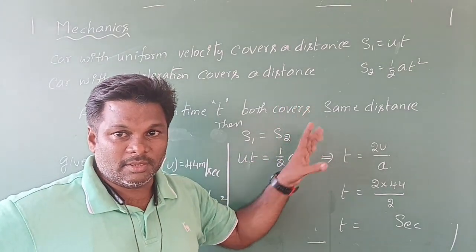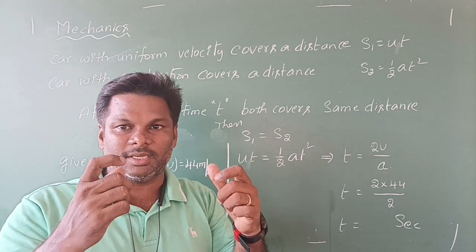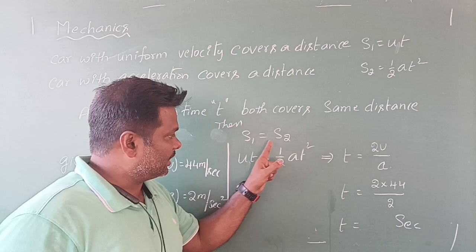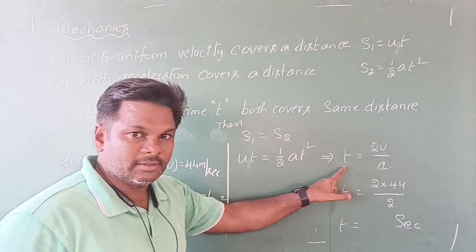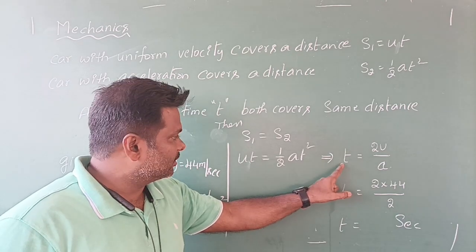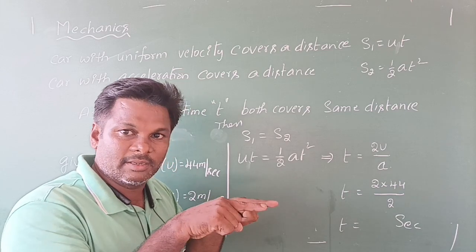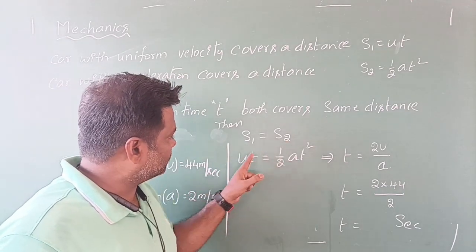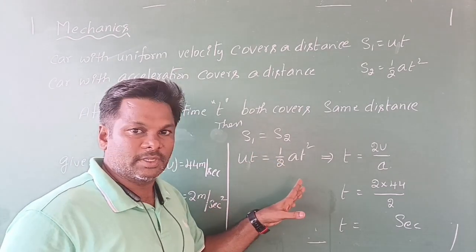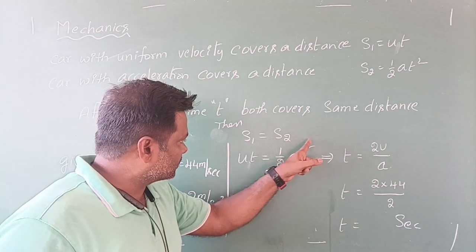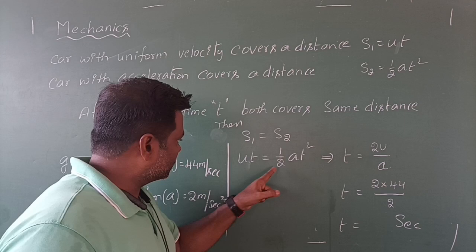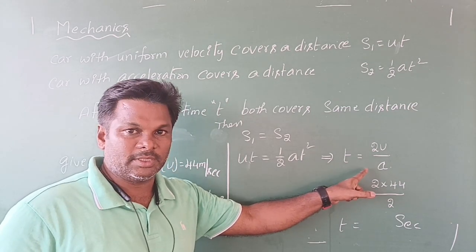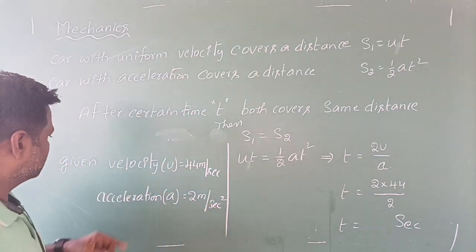What I'm going to do is equate the distance covered by both cars in the same time. After certain time t, they both cover the same distance and meet once again. So s1 = s2, that means ut = ½at². Cancelling t from both sides gives t = 2u/a. This is the shortcut formula for finding the time when both cars cover the same distance.